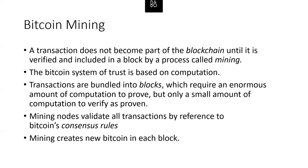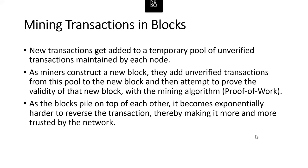New transactions constantly flow in from user wallets and are added to a temporary pool of unverified transactions maintained by each node. As miners construct a new block, they add unverified transactions from this pool and attempt to prove the block's validity with the mining algorithm. Transactions are prioritized by highest fee first. Each miner starts mining a new block as soon as they receive the previous block, including transactions and a fingerprint of the previous block, then starts calculating the proof of work for the new block.